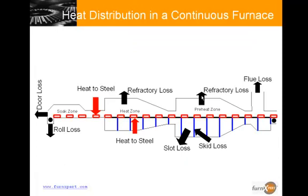Now I am going to talk about heat distribution in a continuous furnace. All the heat from combustion does not go into heating the steel charges. If it did, it would have been a 100% efficient furnace. The heat that is not utilized in heating the product is known as heat losses as shown here by black arrows. Different losses are door loss, roll loss, refractory or wall loss, slot loss, and skid or water loss. And finally there is a flue loss which is the heat that escapes from the furnace with the flue gas.